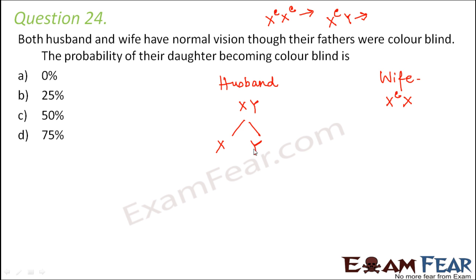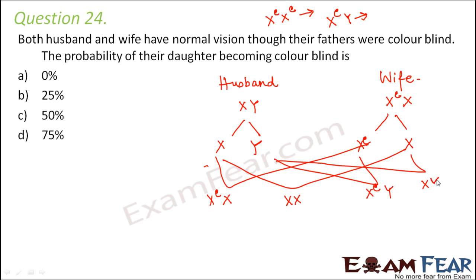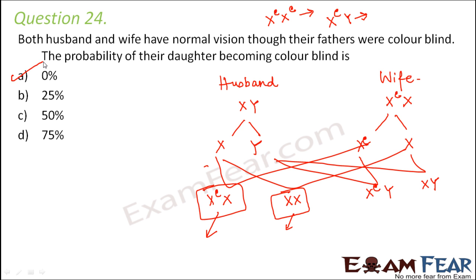Looking at the possible gametes and next generation: the cross XY × XᶜX gives XᶜX (carrier daughter), XX (normal daughter), XᶜY (color-blind son), and XY (normal son). For the daughters, one is a carrier and one is normal — neither is color blind. So the probability of their daughter becoming color blind is zero. Daughters can be normal or carriers, but not color blind.